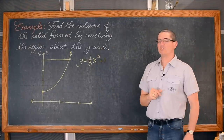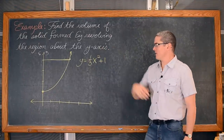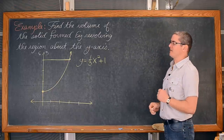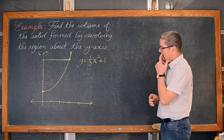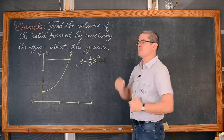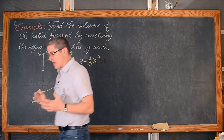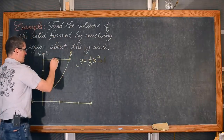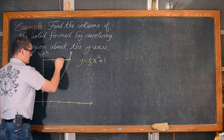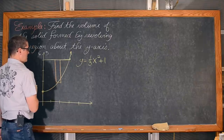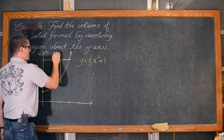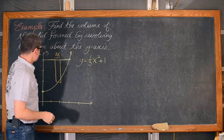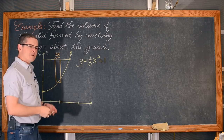Example number one: Find the volume of the solid formed by revolving the region about the y-axis. Since we are just starting to learn the shell method, let's use that one. If we are using the shell method, the y-axis is a vertical line — it is x = 0 — so we are going to be talking about having a vertical representative rectangle, which means that we are going to be integrating with respect to x, and our function is already y in terms of x.